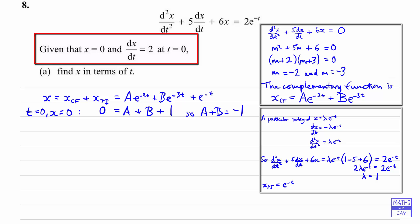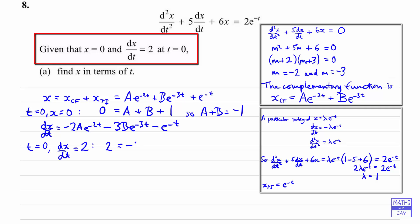Now we need to have dx/dt for the second condition. So differentiating x, we're going to get minus 2a·e^(−2t) minus 3b·e^(−3t) minus e^(−t). Now we can use the other initial condition, which is that when t is zero, dx/dt = 2 — be careful here because often you get initial conditions where everything is zero, but here dx/dt is 2. So we have 2 = −2a − 3b − 1.